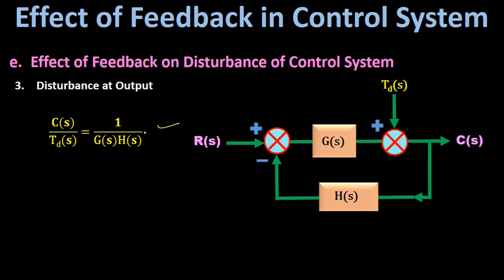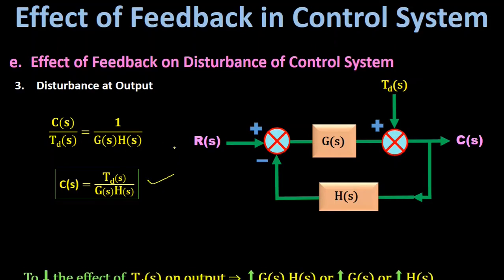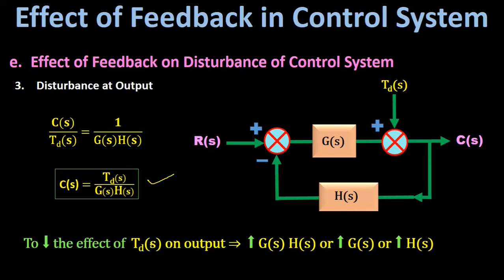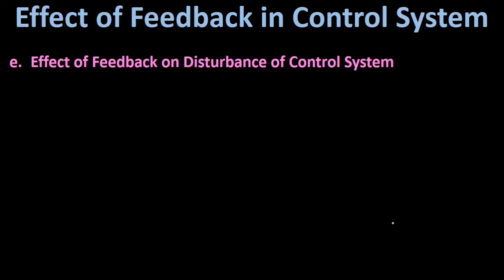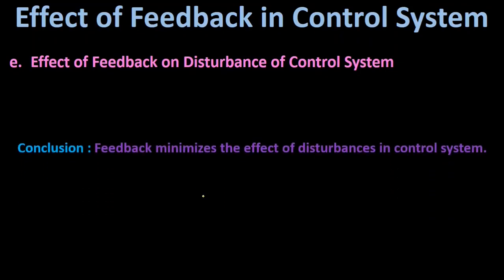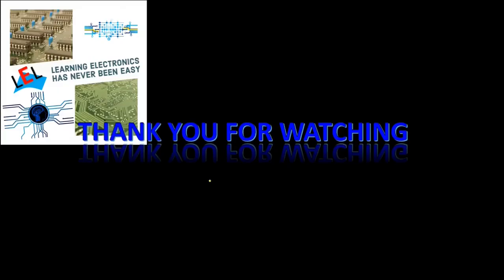So the output response C(s) = T(s) / (G(s)·H(s)). To decrease the effect of disturbance at the output, we must make G(s)·H(s) as large as possible — either by increasing G(s) with H(s) constant, or by increasing H(s) with G(s) constant. The conclusion of this lecture is that feedback minimizes the effect of disturbances in the control system. Thank you for watching, and please subscribe for more updates.